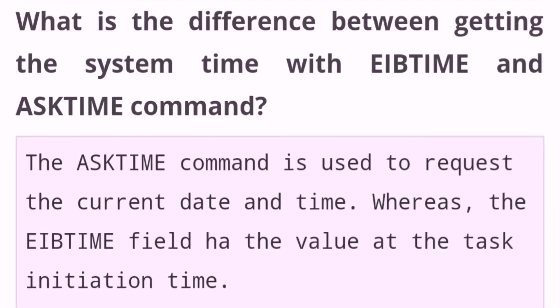What is the difference between getting the system time with EIB time and the ASK TIME command? The ASK TIME command is used to request the current date and time, whereas the EIB time field holds the value at the task initiation time.